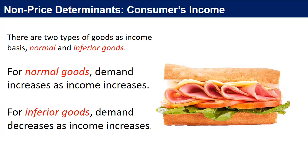Individual income may change depending upon the economic situation. An increase in income leads consumers to buy more goods at every price, while a decrease in income leads consumers to buy fewer goods. There are two types of goods based on income: normal and inferior goods. For normal goods, demand increases as income increases — so an increase in income leads to an increase in demand for sandwiches. For inferior goods, demand decreases as income increases. An increase in income may lead some consumers to buy fewer sandwiches because they can now afford better products like hamburgers or pizza.